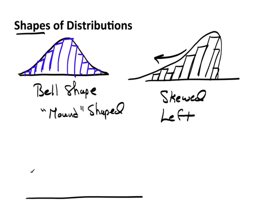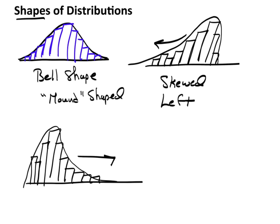Likewise, if you had a histogram that perhaps looks something like this, again if I just lightly draw a curve, I can see the tail goes to the right. We would say that this distribution is skewed to the right.